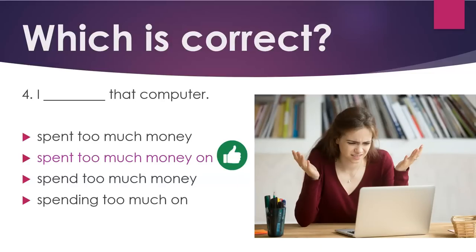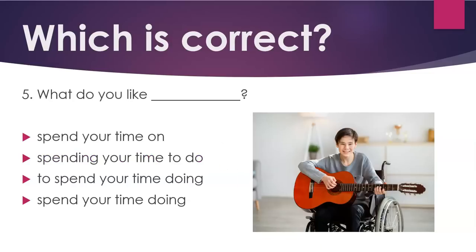Number 5 — which is correct: 'spend your time on,' 'spending your time to do,' 'to spend your time doing,' or 'spend your time doing'? The correct answer is: to spend your time doing.